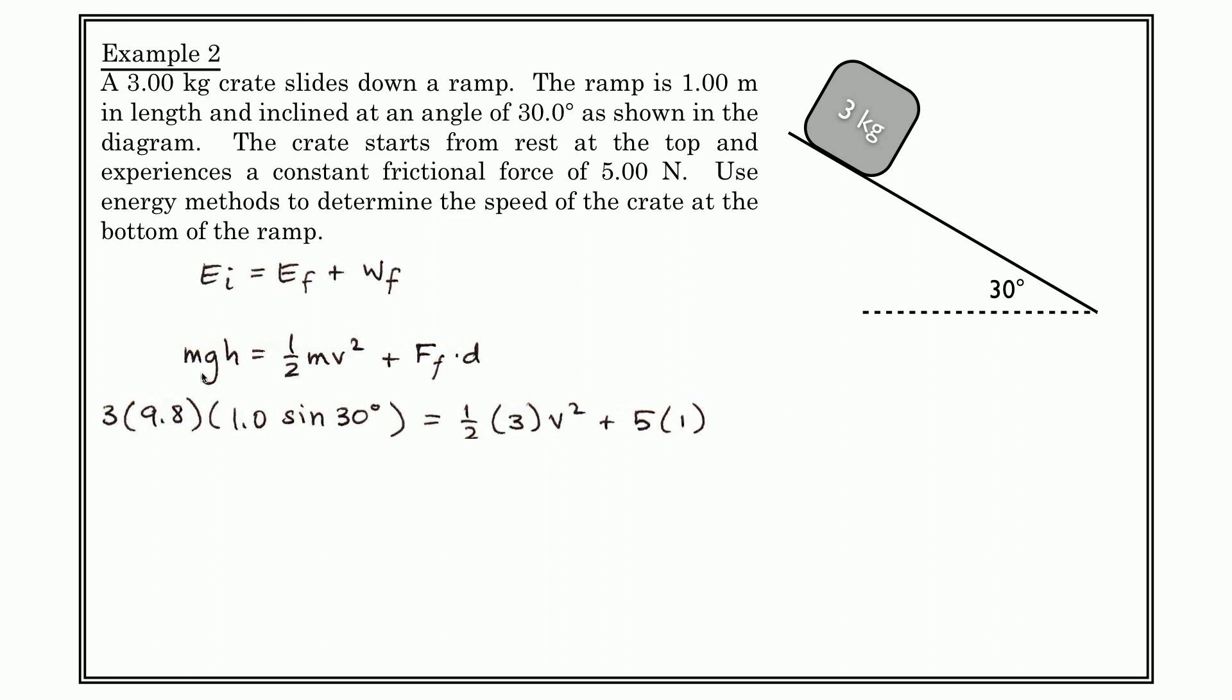You will notice very carefully in this question, your masses are not a common factor. They do not cancel out, because in this term, force times displacement, there is no mass. Okay, so the masses do not cancel. And so here, we would not be able to cross out the three kilograms.